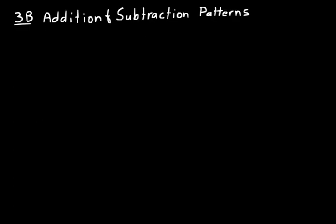Part B of this lesson is on addition and subtraction patterns. For example, if we had 6 plus 8, that equals 14. We could undo that addition by saying 14 minus 8 equals 6, and we get back to that original 6. We say that addition and subtraction are inverse operations — they undo each other.